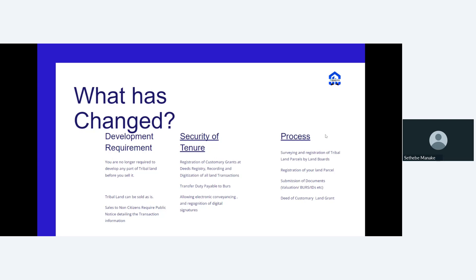In terms of what to expect and what kind of processes are being carried out: first, there is a requirement for tribal land parcels to be surveyed and registered in their large sizes by the land boards. Once the Tribal Land Act came into play, that's the first thing all land boards started doing. Land boards have discretion in terms of where they start — they can register the larger piece first and then the smaller pieces, or register first where people have occupied and then register the larger piece.